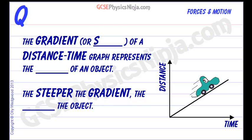We can describe how an object moves with time by drawing a distance-time graph. Distance goes on the vertical axis and time goes on the horizontal axis.